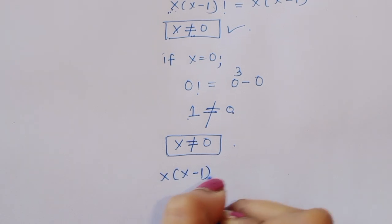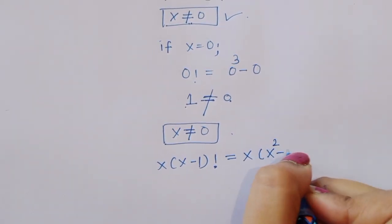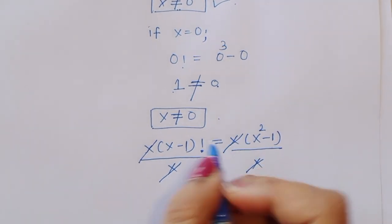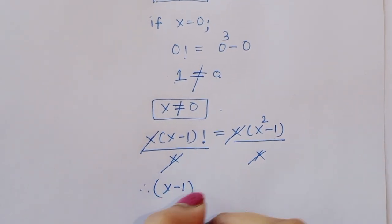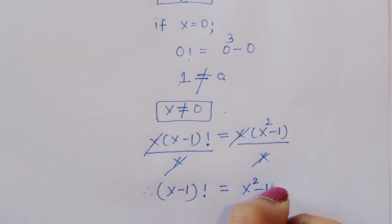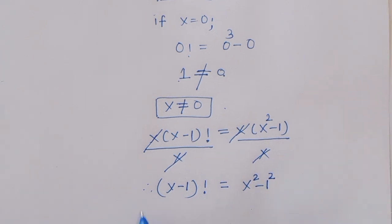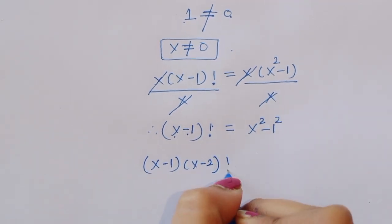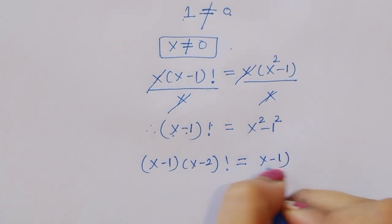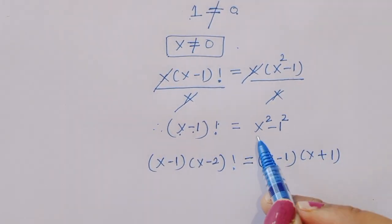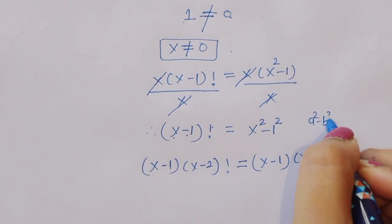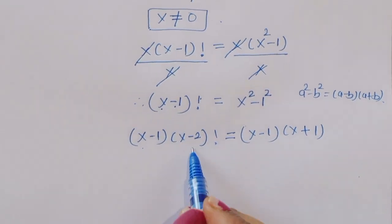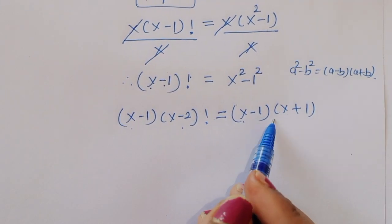Dividing both sides by x: x times (x minus 1) factorial equals x times (x squared minus 1), divided by x. The x cancels, giving (x minus 1) factorial equals x squared minus 1. We can factor the right side using the difference of squares: x squared minus 1 equals (x minus 1)(x plus 1).